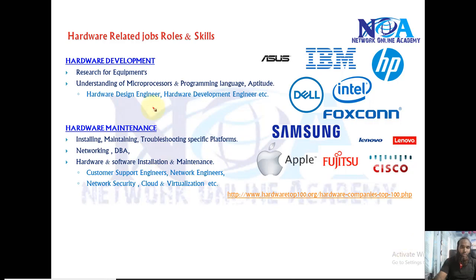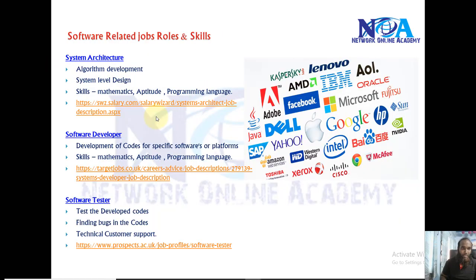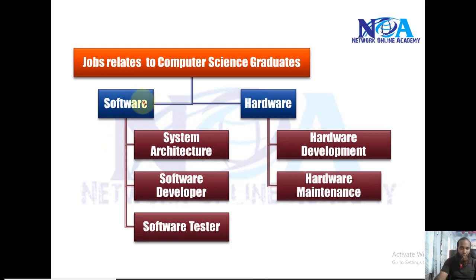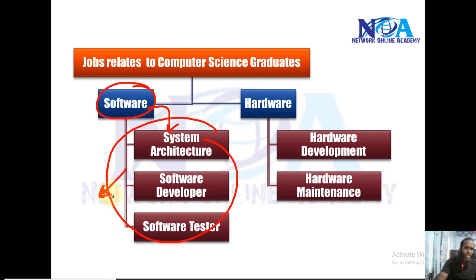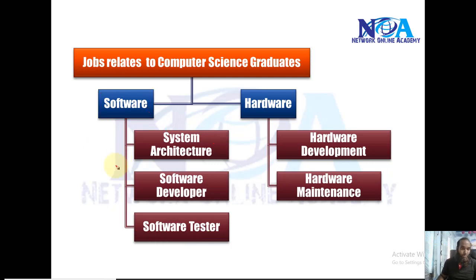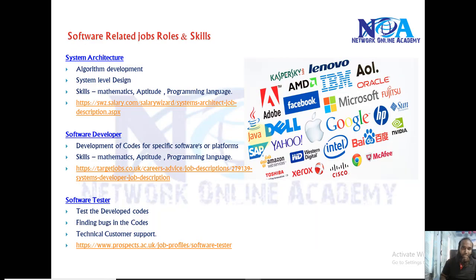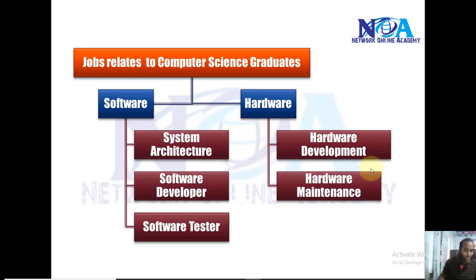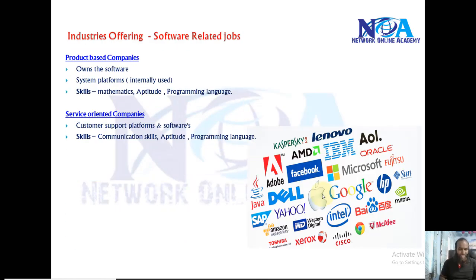Now I'll try to give an overview of the hardware related job roles and skills. We have two categories — like in the previous videos we already covered the jobs relating to computer science, the software related jobs where you are more into programming, developing code or testing. In hardware related jobs, there are also two categories: you can either develop specific code for specific hardware or microprocessors, or get into maintenance.